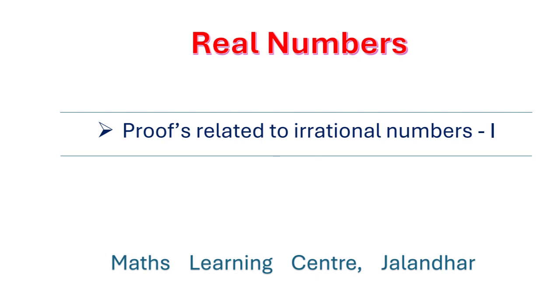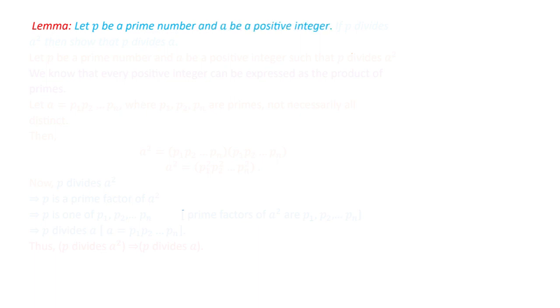In this presentation on real numbers, we are going to discuss certain proofs related to irrational numbers. We start with a lemma that will be used in our next theorems. This lemma states that let p be a given prime number and a be any positive integer. Then, if p divides a squared, we have to show that p divides a.